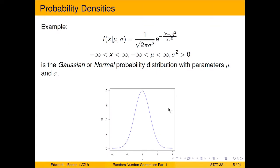Okay, so here's an example of a probability density function. So this is the normal or the Gaussian probability distribution. And it actually has two parameters. So in this case, θ is two numbers instead of one number—we have a mean and a standard deviation. And you've seen this in your previous statistics classes, it's the standard bell curve. I have a graph of one here that's centered at zero with a standard deviation of one.